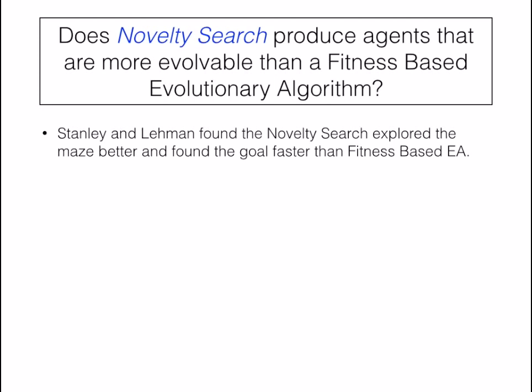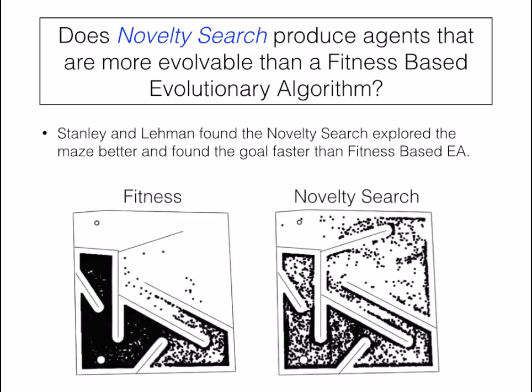We even found that NoveltySearch explored the maze better and found the goal faster than fitness-based evolutionary algorithm. Looking at some of their plots, on the lower left-hand side we see the final locations for all the robots evolved with fitness-based EA — most of the agents were in the dead end right below the goal and didn't really explore the maze much. On the right, we see with NoveltySearch that most of the agents explored the maze, wandered about, and found the goal much more easily.